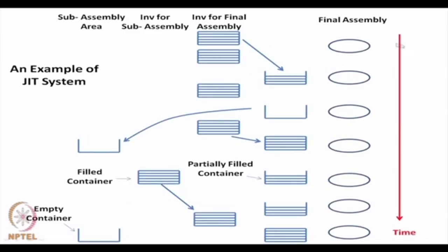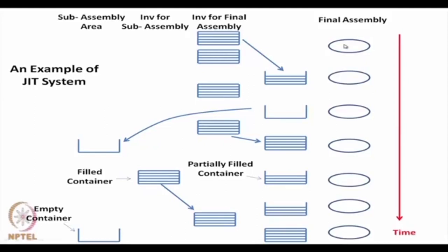Here is an example of how a just-in-time system operates in practice. Assume we have to assemble a few sub-assemblies. There is a sub-assembly area and a final assembly area, and we have 2 containers that are full with sub-assemblies, both available at the site of the final assembly. The vertical axis represents the flow of time measured in minutes. The first container is taken and assembled. After about 15 minutes, the first container is half empty and the second container is intact.